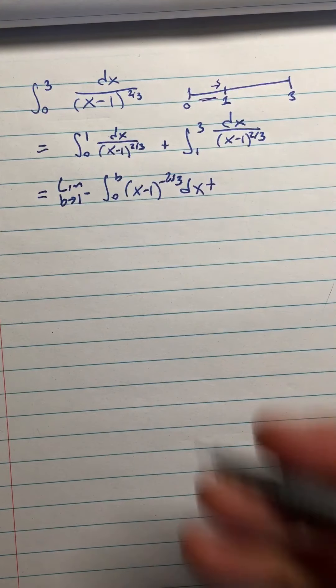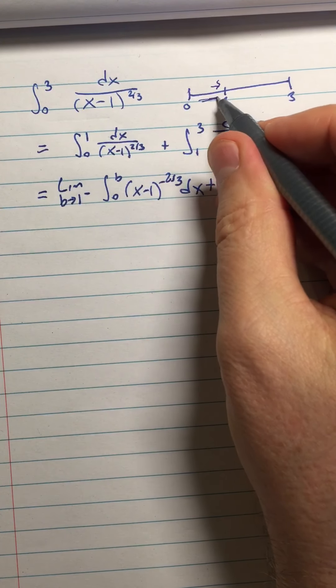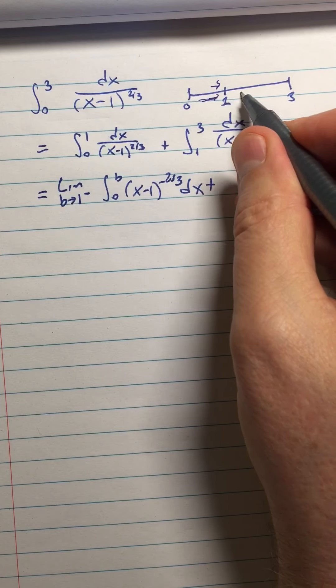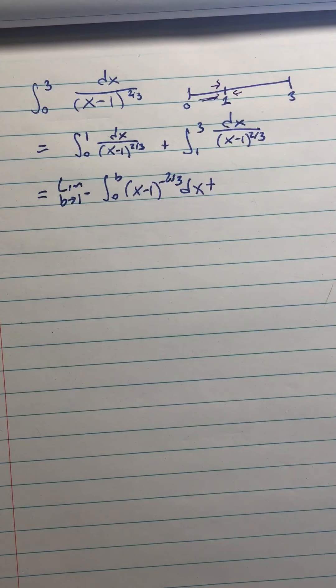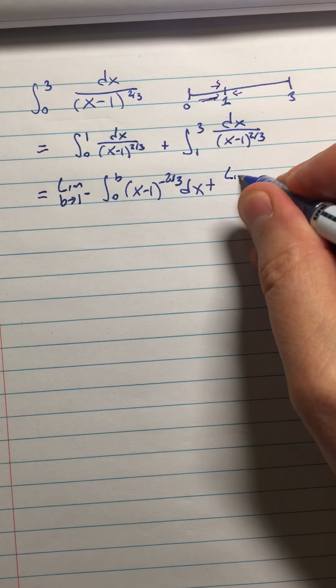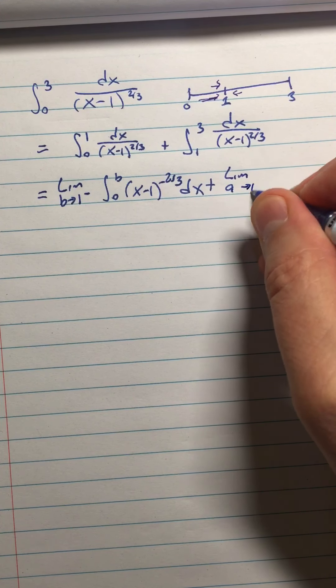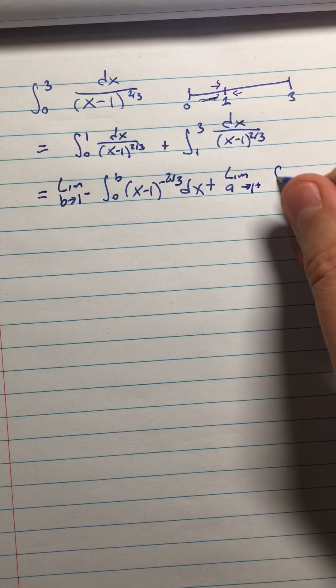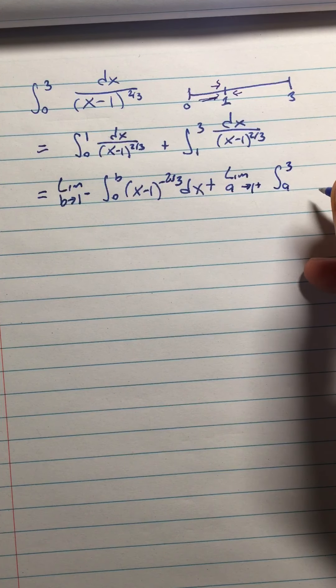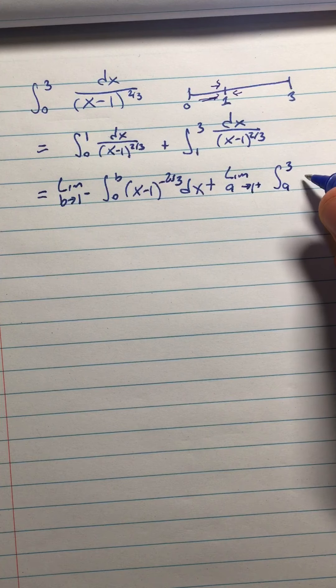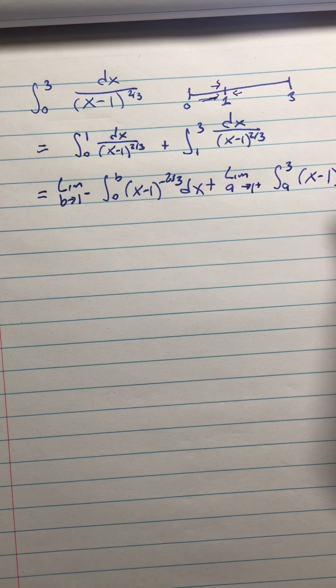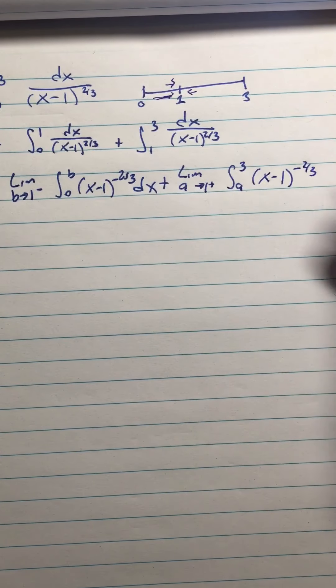Okay, so the b is approaching 1 from the left, all right? The a, of course, is going to approach the 1 from the right. And sometimes that distinction will be crucial, and sometimes it won't. So the limit is a approaches 1 from the right of the integral from a to 3 of (x-1)^(-2/3) dx.